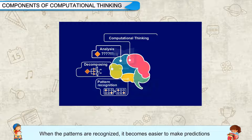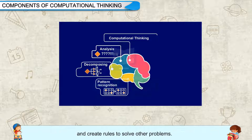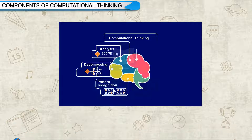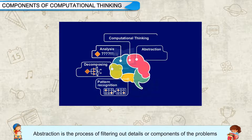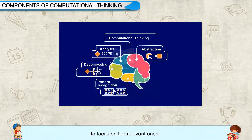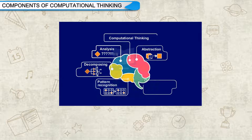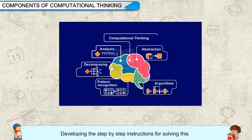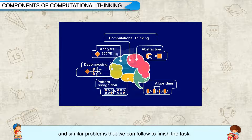When patterns are recognized, it becomes easier to make predictions and create rules to solve other problems. Abstraction is the process of filtering out details or components of the problem to focus on the relevant ones. Algorithm Design is developing step-by-step instructions for solving a problem and similar problems, which we can follow to finish the task.